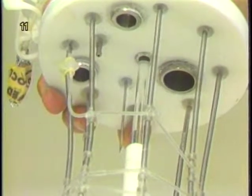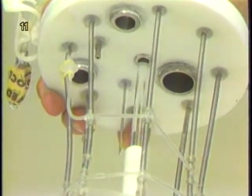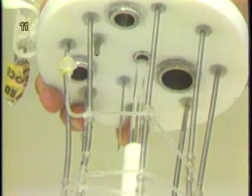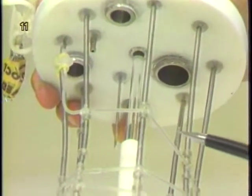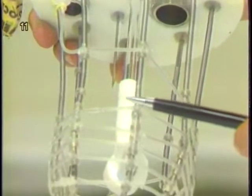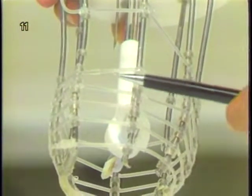In a micro carrier culture, especially in small-scale operations, sparging is often avoided. Rather, the supply of oxygen and carbon dioxide is achieved by diffusion through silicone rubber tubing.